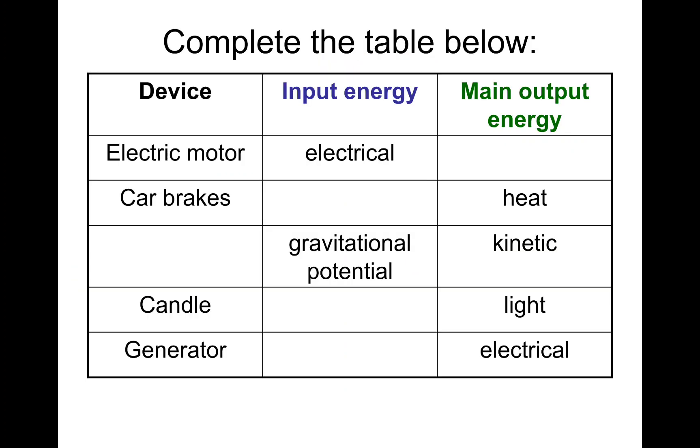Next I've got a table for you to do. Complete the table below. So we've got a device, and I'm going to fill the blanks in. Device, electrical motor, input energy, electrical. Main output, kinetic. Device, car brakes, input energy, kinetic. Main output energy, heat. What about this one? Gravitational into kinetic. That'll be a falling object. Next one, candle, input energy. That's chemical, or should be chemical potential energy that's stored within the candle wax. Main output energy will be the light. Generator, input energy. Kinetic. You might not get that one, or you might have said chemical potential for the fuel that you put in some generators to produce electricity. If you put chemical, that's also okay. But you'll learn about how generators work at some other time.